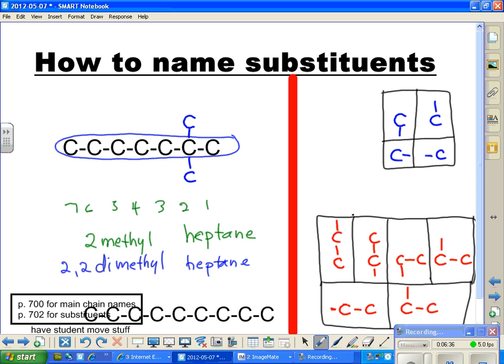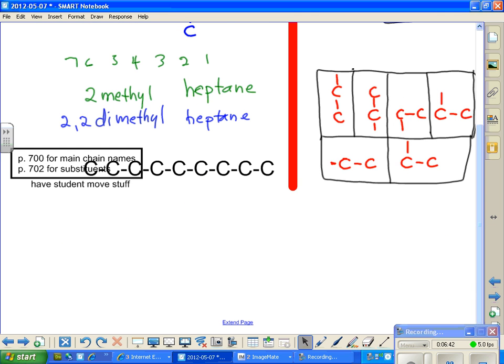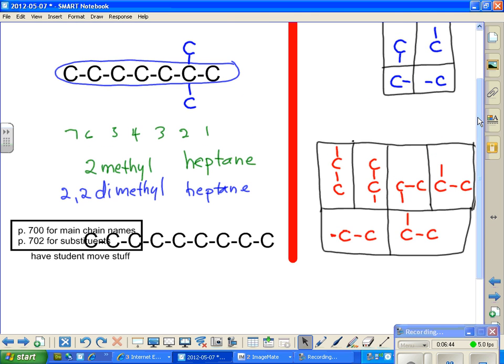I want to do one more before I let you out of here. So let's see if we can get this. I'm going to put one of these ethyl groups on there. Let's put it on the bottom. Where's ethyl? 4.